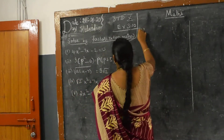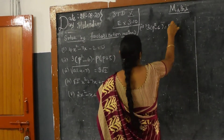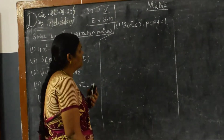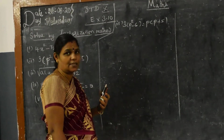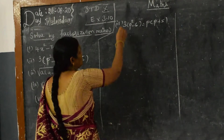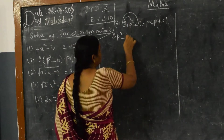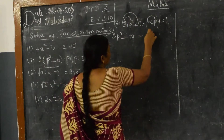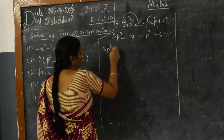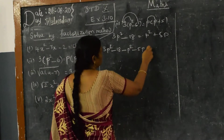What is the second problem? 3 into p squared minus 6 is equal to p into p plus 5. First of all, you see this is not in the standard form. The standard form is ax² + bx + c = 0. So first you multiply: 3p² - 18 = p² + 5p. Bring all terms together: 3p² - 18 - p² - 5p = 0.